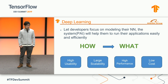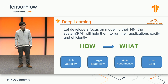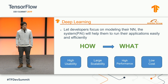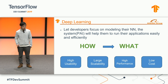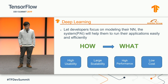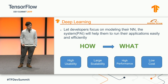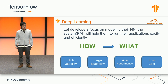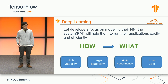Since this is a TensorFlow Dev Summit, I will talk more about our work in the deep learning engine. Our ultimate goal is to let developers focus on modeling their neural network, and let the system — PAI — help them run their model easily, efficiently, and at scale.